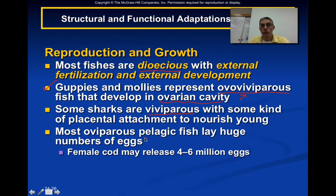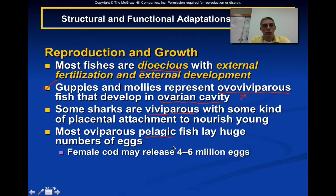Those fish considered pelagic — living in the open ocean — can lay a huge number of eggs, and they have to, because in that environment most of those eggs are going to be consumed as food by other fish. If you think about four to six million eggs being released at one time, the hope is that a small handful will actually reach adulthood.